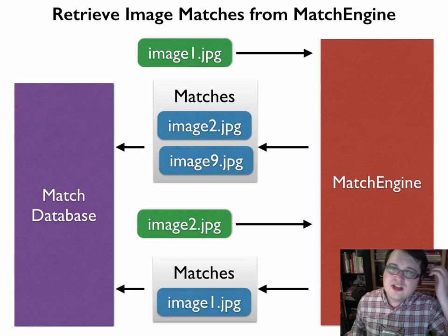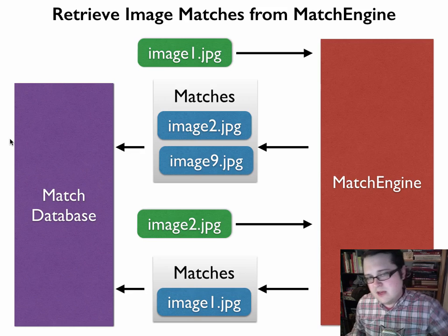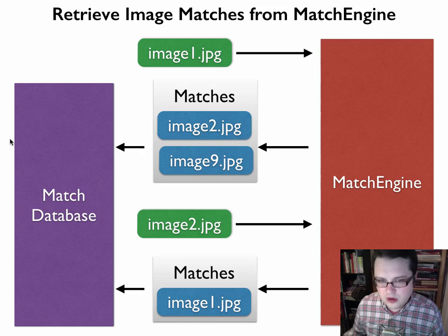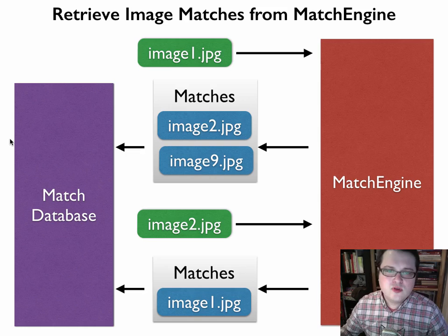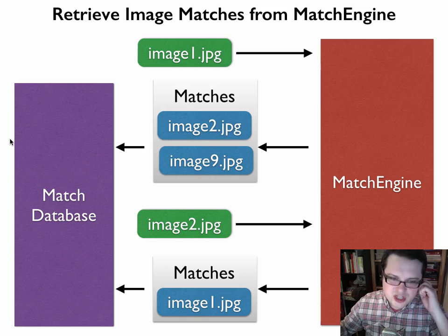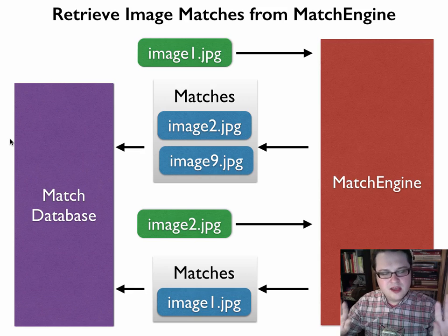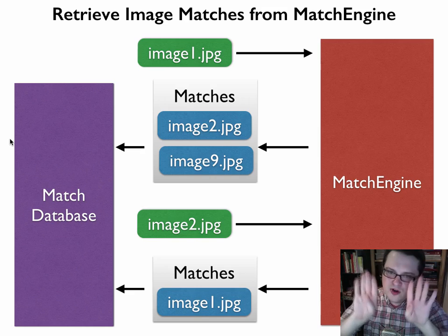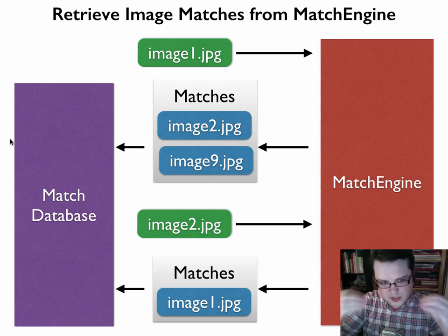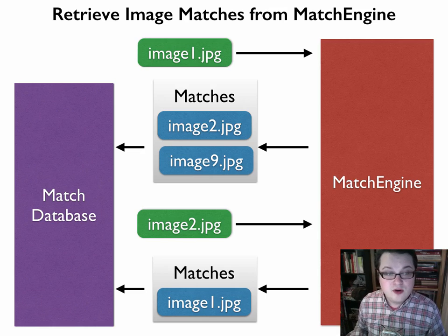I can then go to Match Engine and say, for a given image — say image one — show me what images are similar to it. Match Engine will come back and say image one is similar to image two and image nine, and image two is similar to image one. You get these relationships where you can say these two images are very similar to each other, and there is now a relationship between them. That can be very useful.